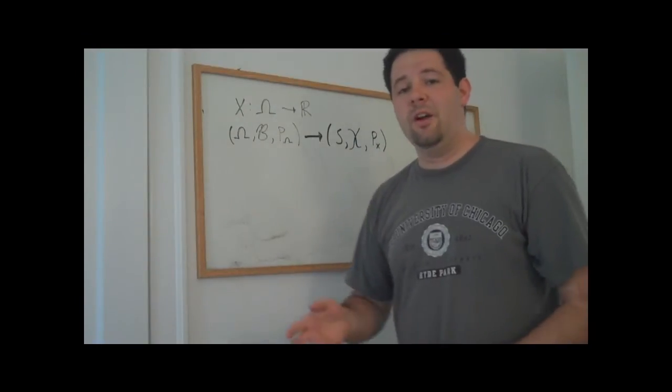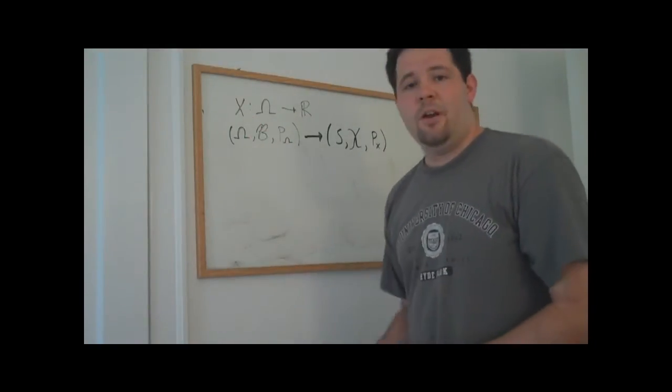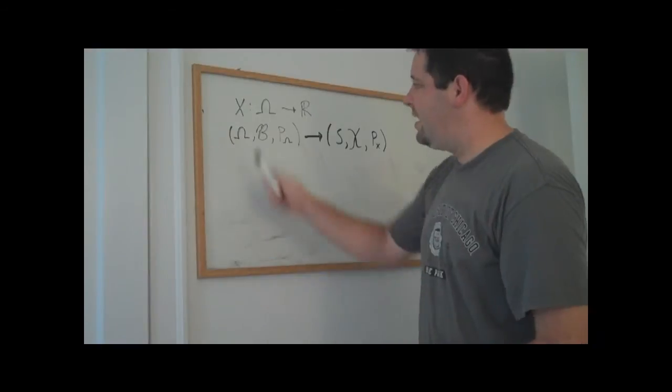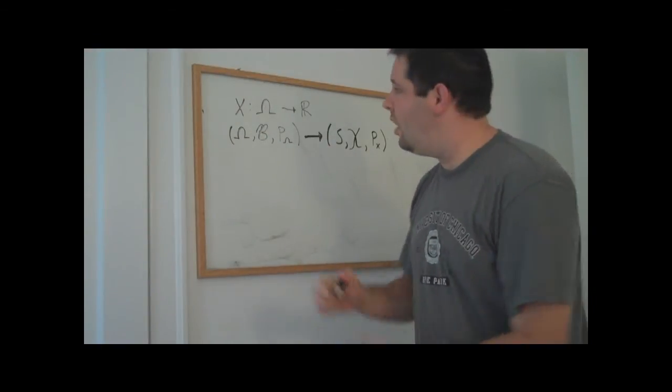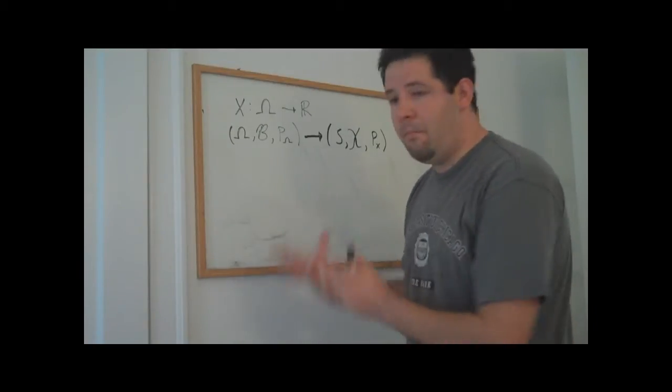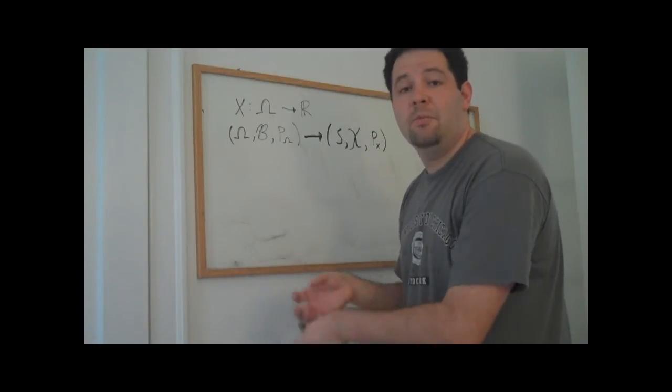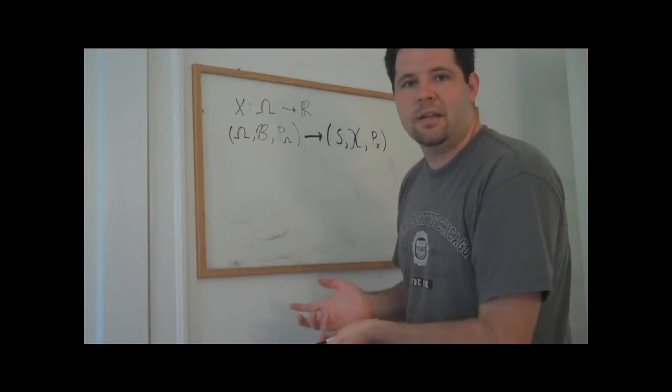Why we like to use random variables instead of just using raw probability is that random variables are numbers. And so we can take averages, we can take squared averages, we can do all sorts of different things with those numbers. We can describe more things once we have a random variable because we can take averages, take medians, and this really makes a lot more sense.